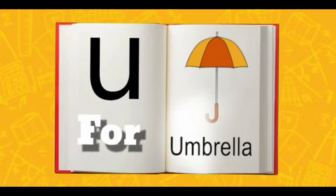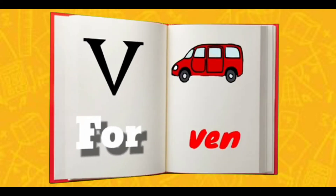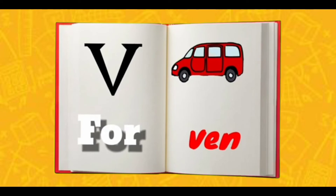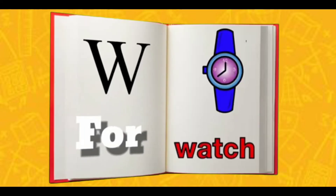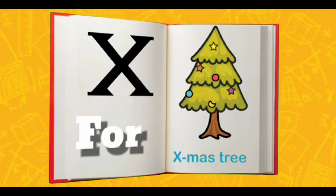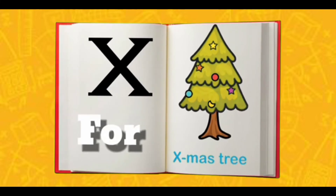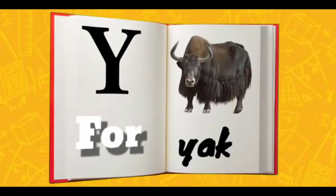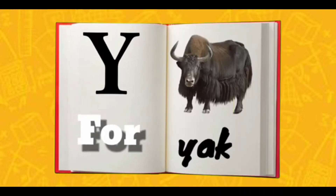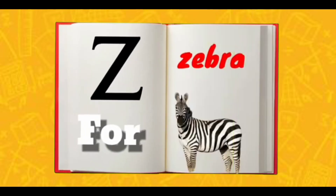T for Tiger, U for Umbrella, V for Van, W for Watch, X for X-ray, Y for Yo-yo, Z for Zebra.